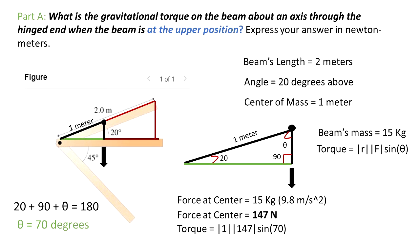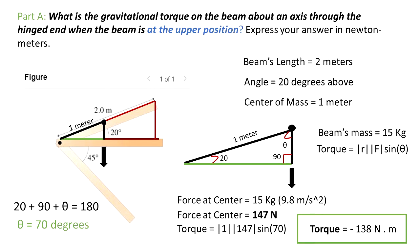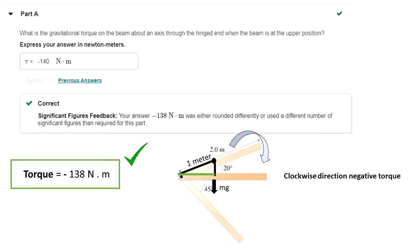From this, we have that torque equals 1 m × 147 N × sin(70°), which equals negative 138 Nm. The negative sign denotes that the torque is trying to twist the beam in a clockwise direction. Clockwise is negative by convention and counterclockwise is positive by convention.